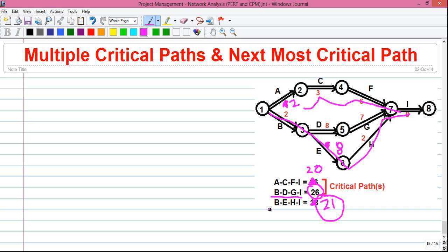And our next most critical path will be of next most maximum value. That is, 21. So that relates to B, E, H, I. So B, E, H, I will be our next most critical path.